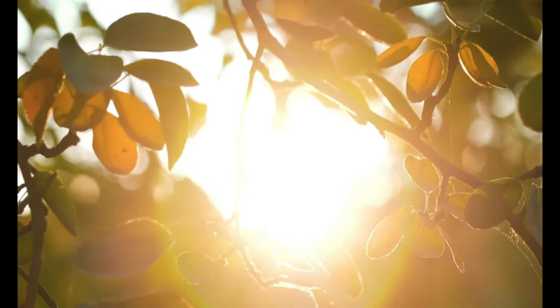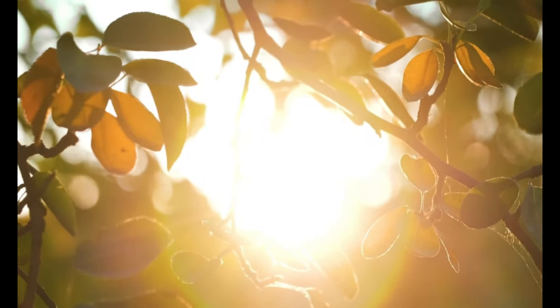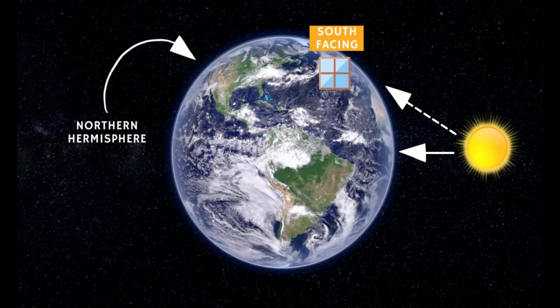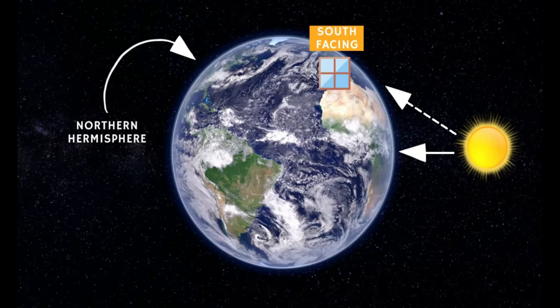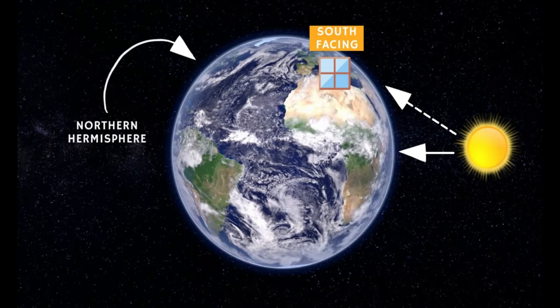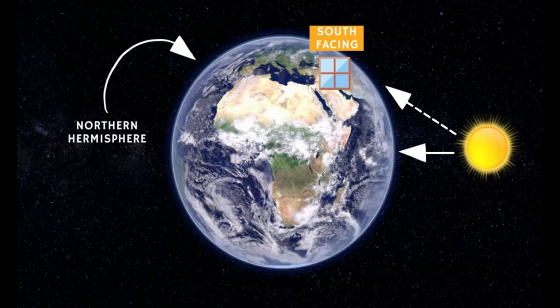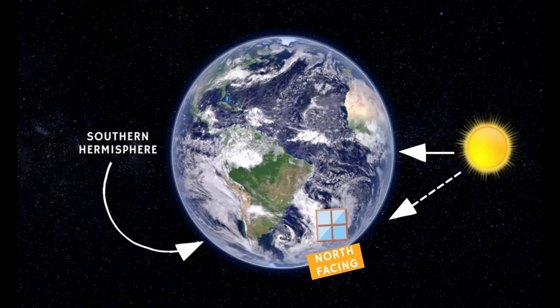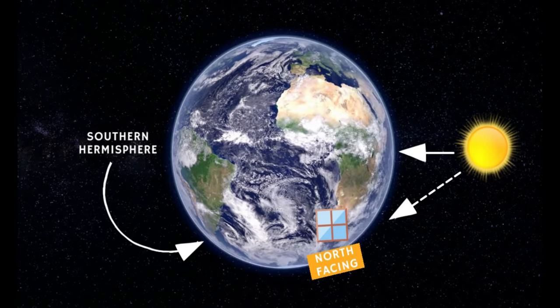If you are located in the northern hemisphere, such as myself, south-facing windows will be receiving the most amount of sunlight. This makes sense because we are north of the equator and the sun is heading directly closer to the equator, so it will be relatively to our south. On the contrary, if you are located in the southern hemisphere, north-facing windows will be receiving the most amount of sunlight.